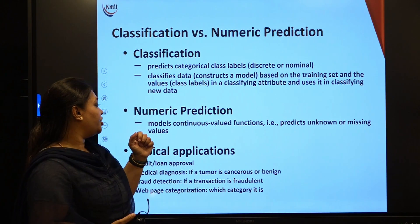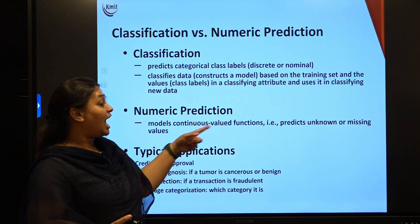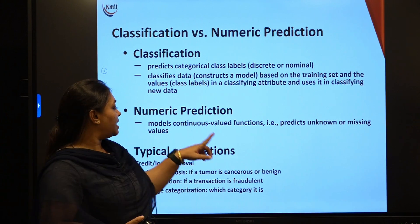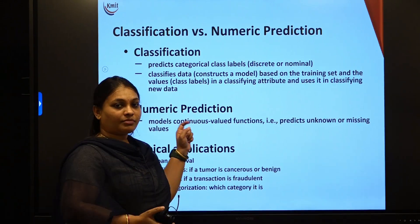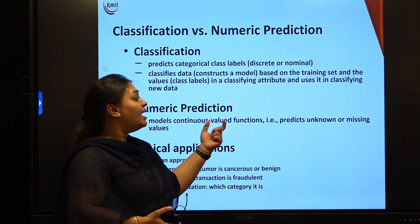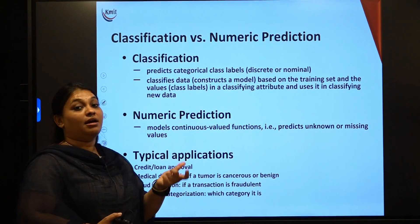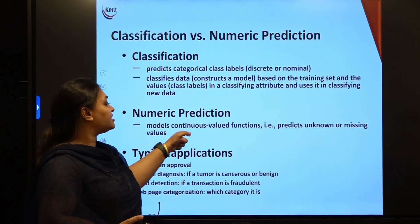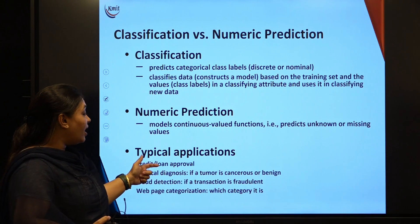Coming to numeric prediction — it models a continuous valued function, that is, it predicts unknown or missing values. This relates to your data cleaning, where we handle noisy data, missing values, and errors. In numeric prediction we are predicting the values — predicting whether a given entry is unknown or missing.